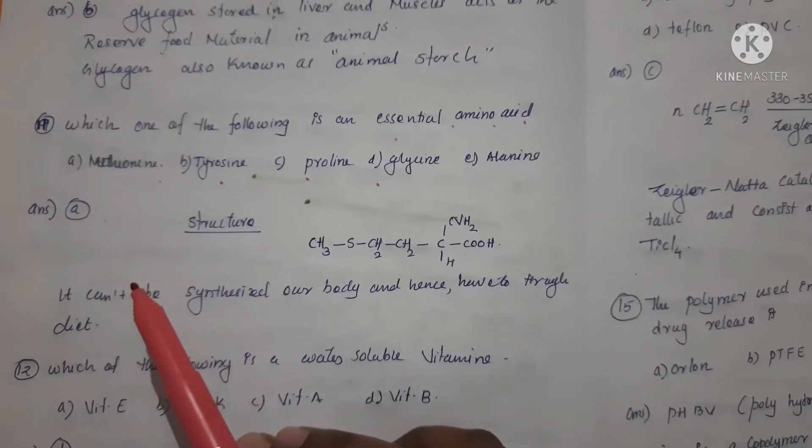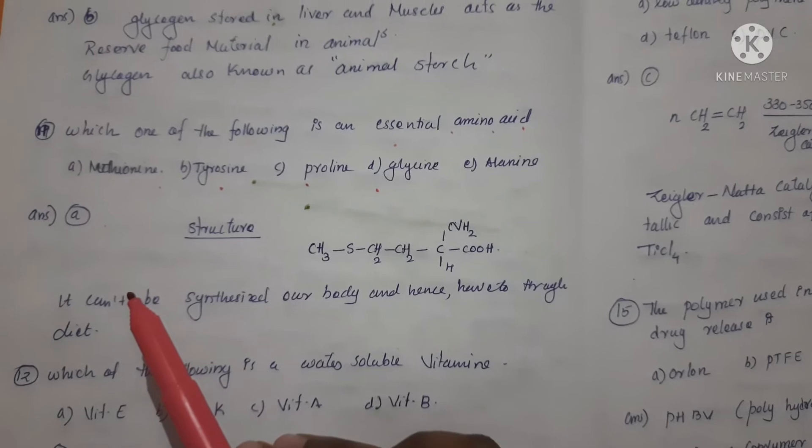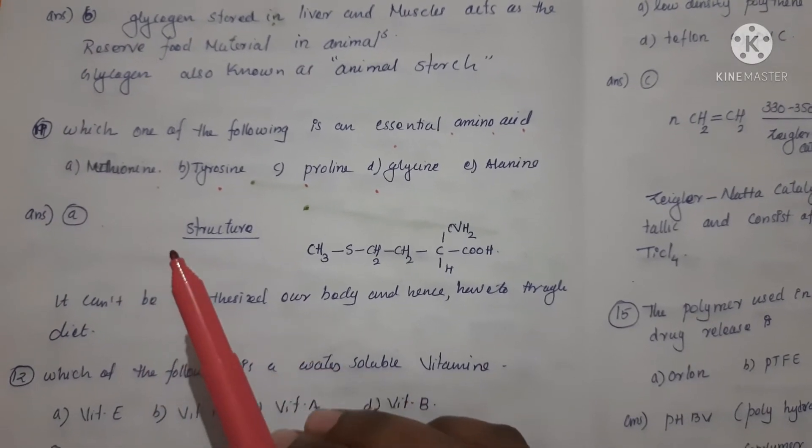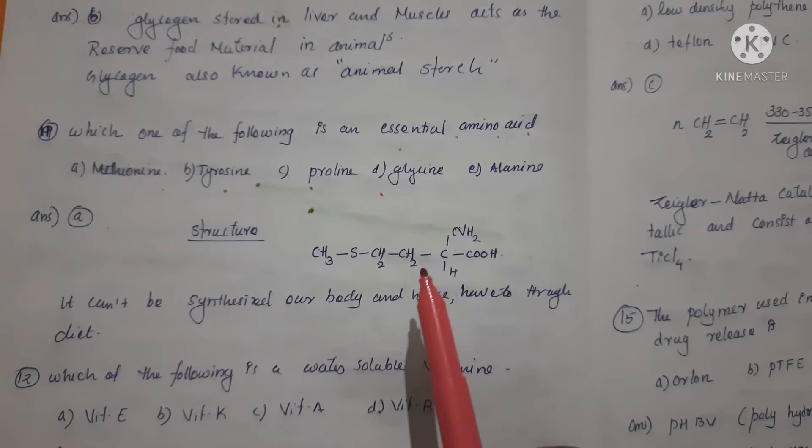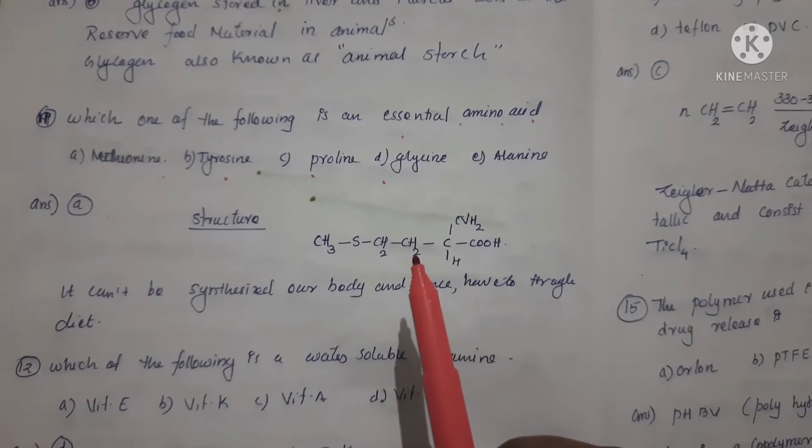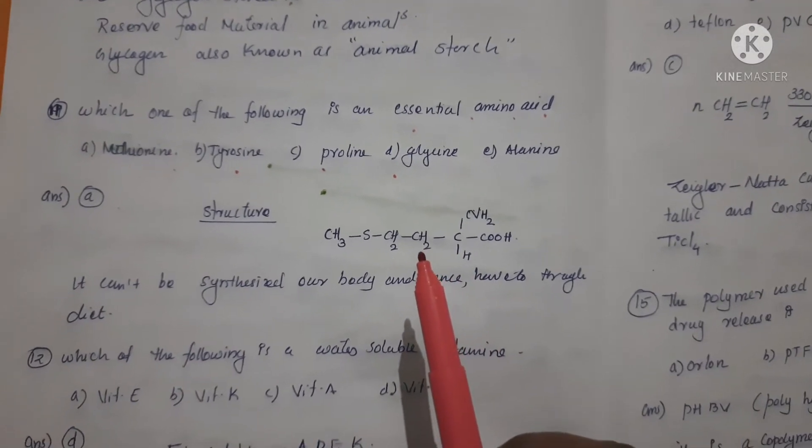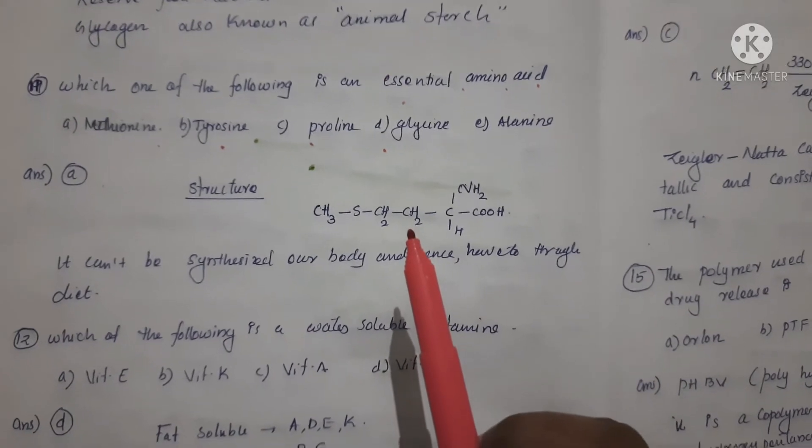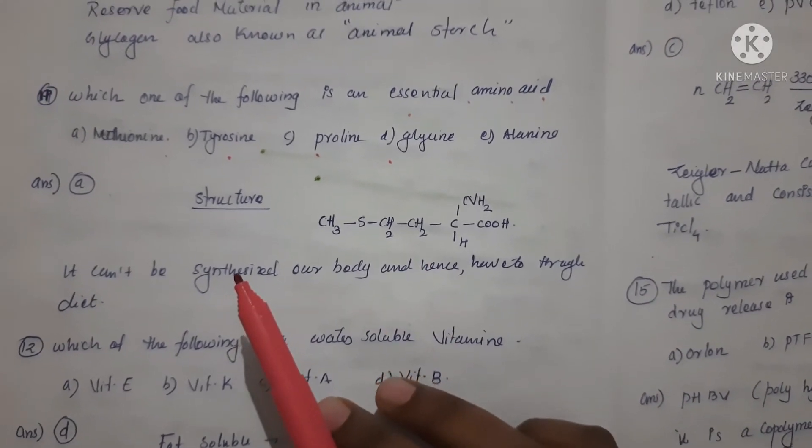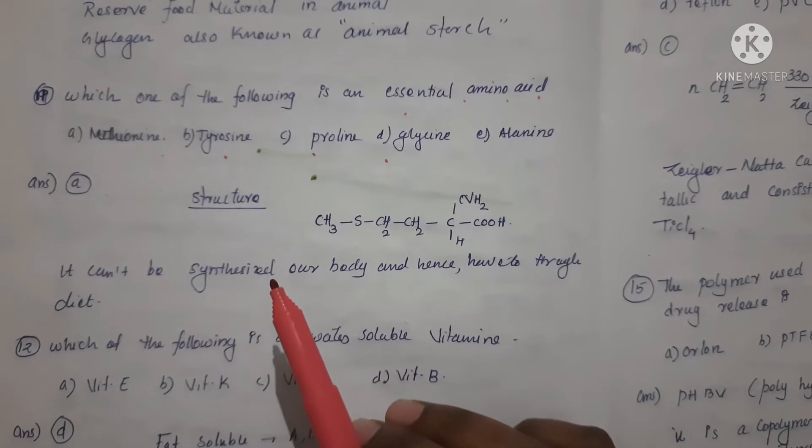As I mentioned in earlier videos, there are essential and non-essential amino acids classified. You can refer to those videos. There's a video in detail where 20 amino acids and their structures are discussed. This amino acid cannot be synthesized by our body and hence have to be obtained through diet.